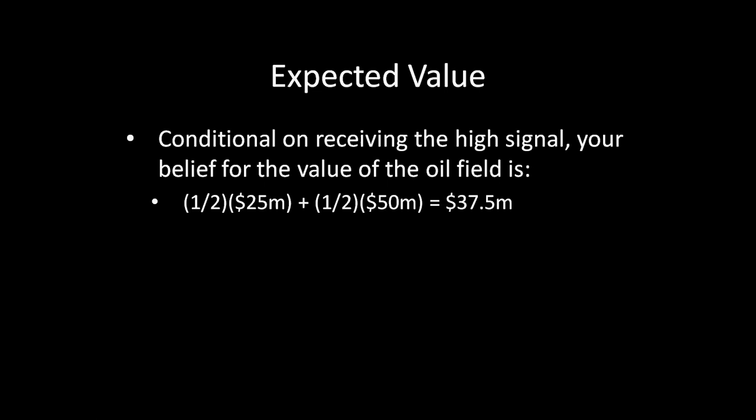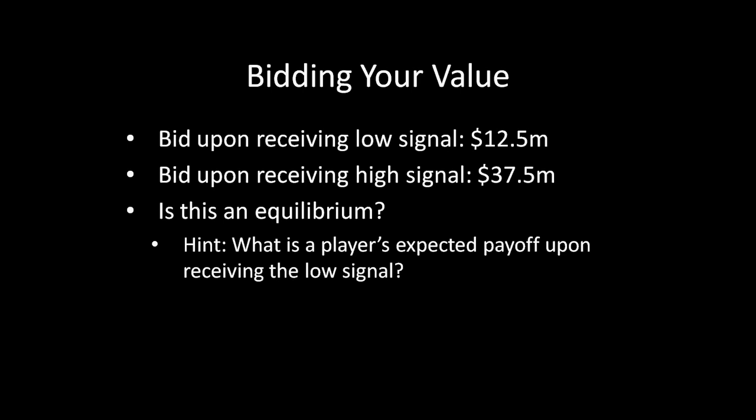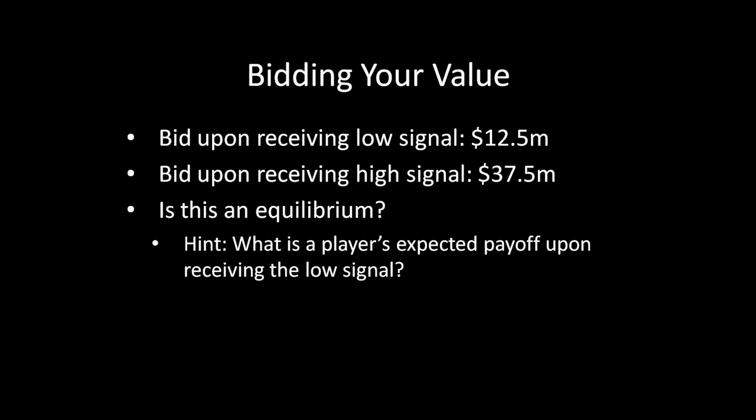Let's think back to that second price auction rule. If you bid your true value, a type that receives a low signal would bid $12.5 million, and a type that receives a high signal would bid $37.5 million. My question is whether this is an equilibrium. This might be an opportunity for you to pause and work this out on your own — think about whether there is a profitable deviation for either the low type or the high type. We will now see that it is not an equilibrium.